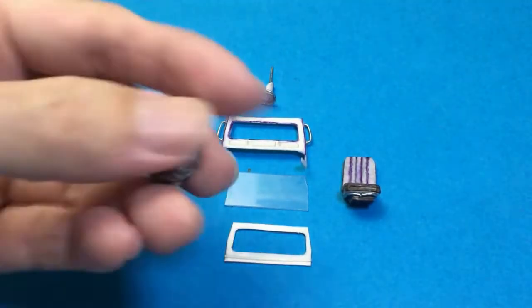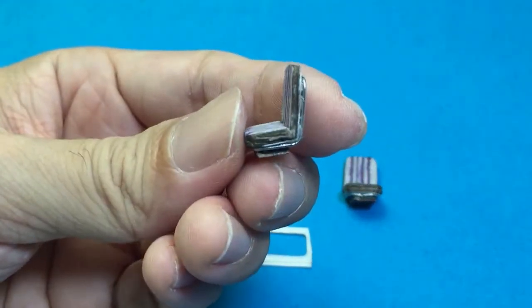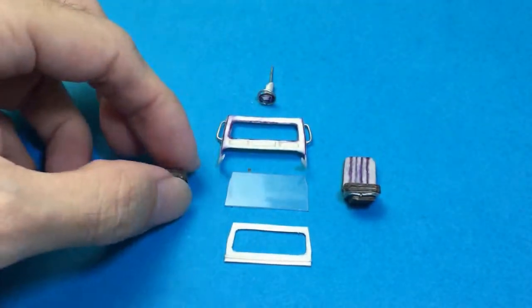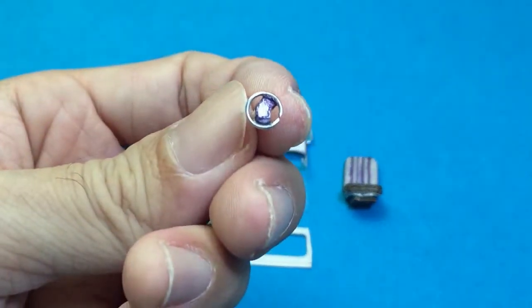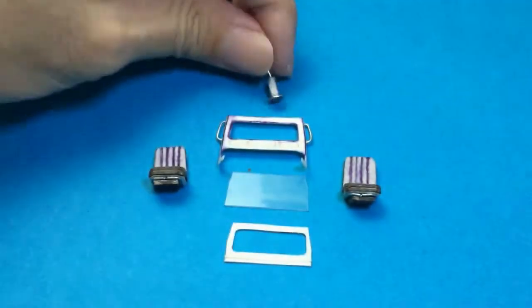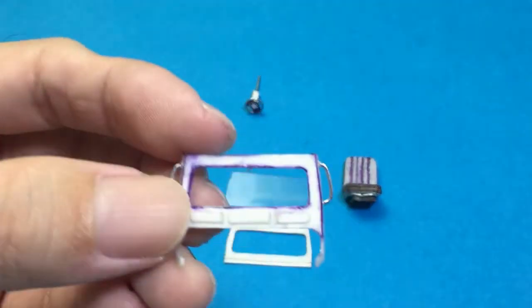I continued building the other parts like the front seats, steering wheel, and windscreen frame.